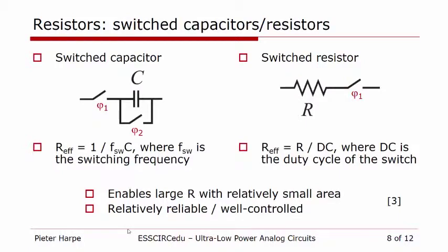If you don't want to use pseudo resistors, an alternative is to use a switched-capacitor or switched-resistor network. Here you have a capacitor or a resistor, you add a few switches controlled by a certain clock frequency or duty cycle, and by doing that you get a gain factor on top of your original impedance. In this way, with small passives and a few switches, you can make a high effective impedance resistance. The nice thing is that you only need clock signals and regular passive components, so the performance is more predictable compared to pseudo resistors.